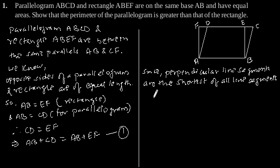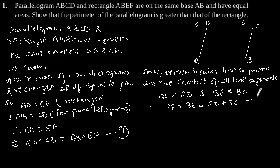So we can say that AF is smaller than AD and similarly BE is smaller than BC. Therefore AF plus BE is smaller than AD plus BC. Let's say this is our equation 2.